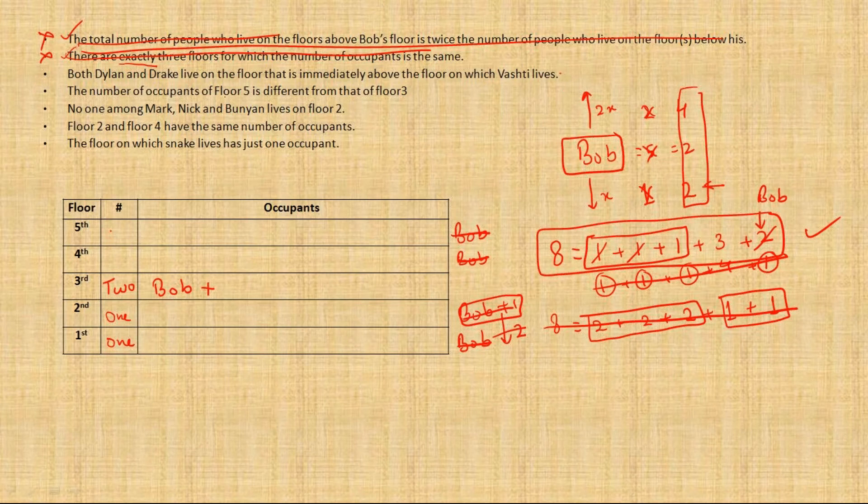The number of occupants of floor 5 is different from that of floor 3. Look, it doesn't happen because on floor 5 there are either going to be 3 people or 1 person, and on 3rd floor there are going to be 2 people. So this is a redundant data. It was not necessary.